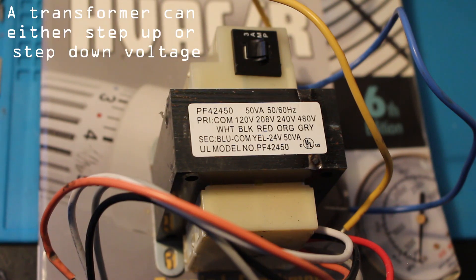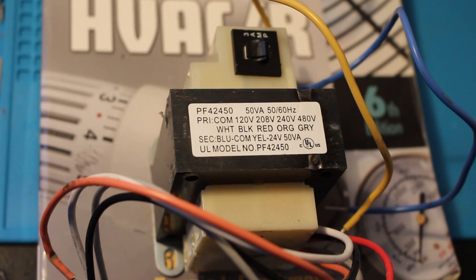The primary is the winding connected to the power source and brings power to the transformer, while the secondary is used to supply power to the load.